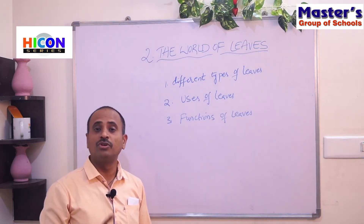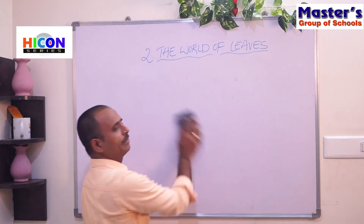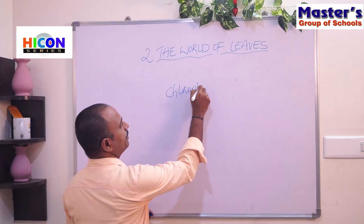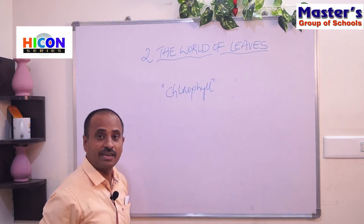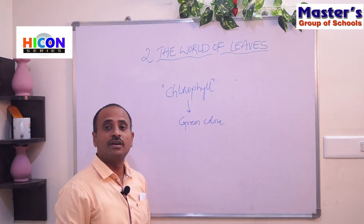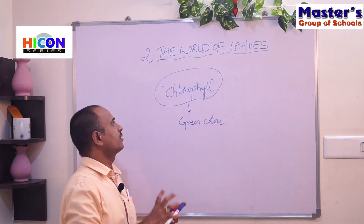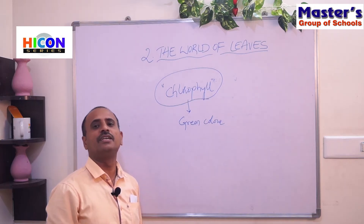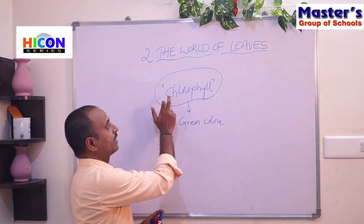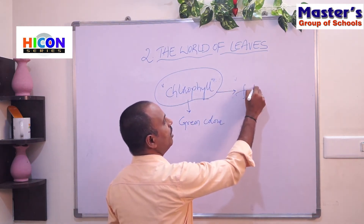Most of the leaves are green in color because the leaves have a green color pigment called chlorophyll. Because of this green color pigment chlorophyll, the leaves are green. If there is no chlorophyll, the leaves are not green — so the reason for the green color of leaves is chlorophyll.